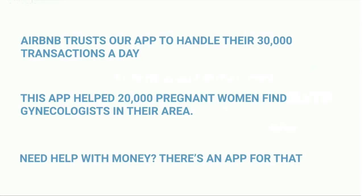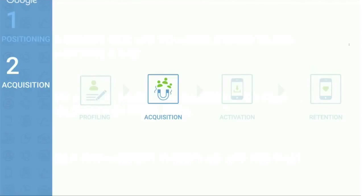Here are three headline examples: 'Airbnb trusts our app to handle 30,000 transactions a day,' or 'This app helped 20,000 pregnant women find a gynecologist in their area,' or 'Need help with money? There's an app for that.' When you use headlines properly you start instantly increasing app growth without spending any extra dollars.